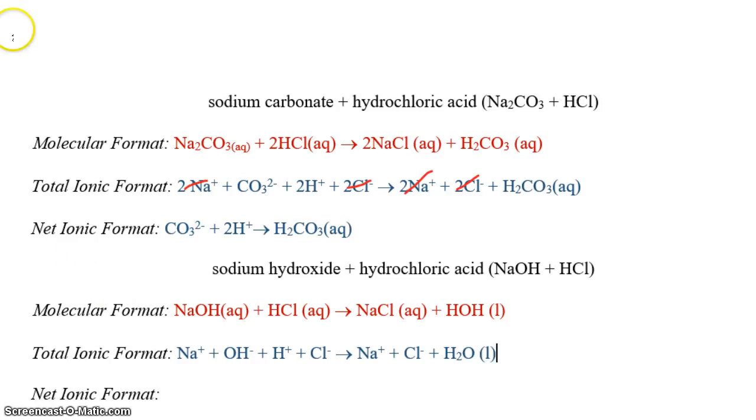So let's look at our net ionic. We have sodium ions over here, sodium ions over here. Cross those out. We have chloride ions over here, and chloride ions over here. So we can cross those out. So our net ionic equation is hydroxide ion plus hydrogen ion goes to form water.